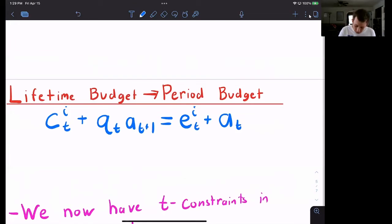So notice that this is going to be true for all t. So we're going to have t constraints in our maximization problem.